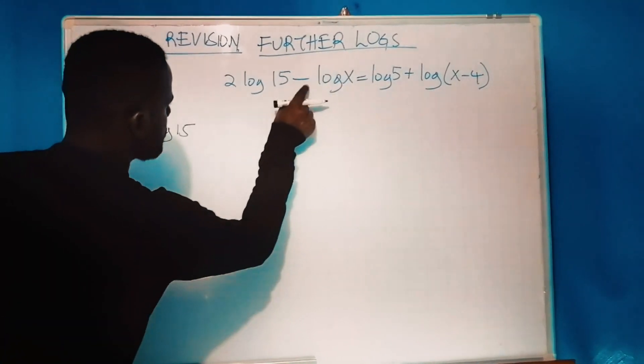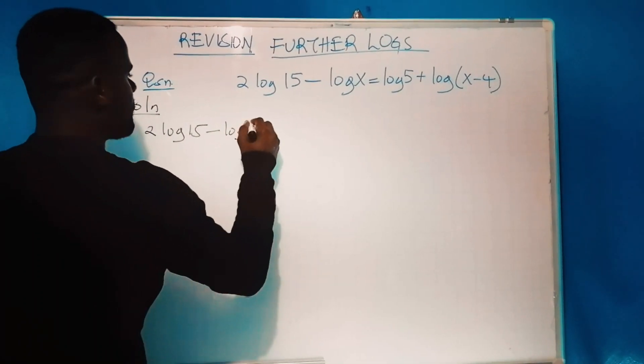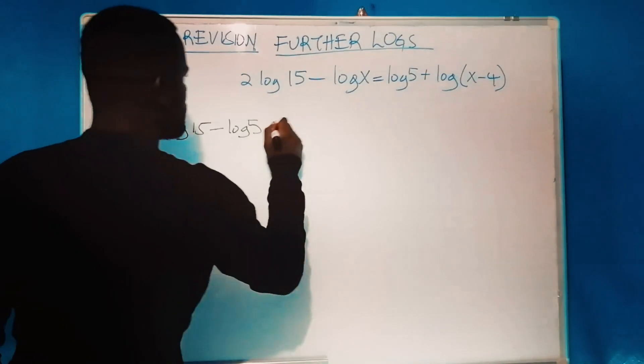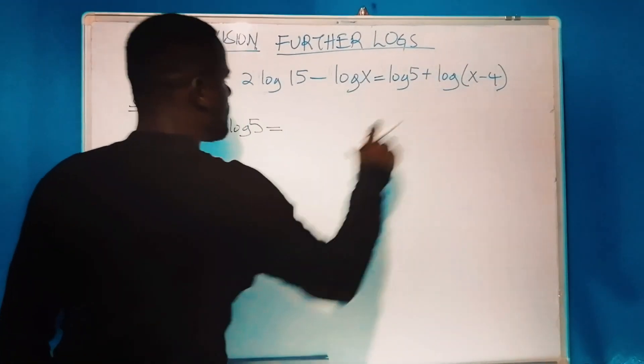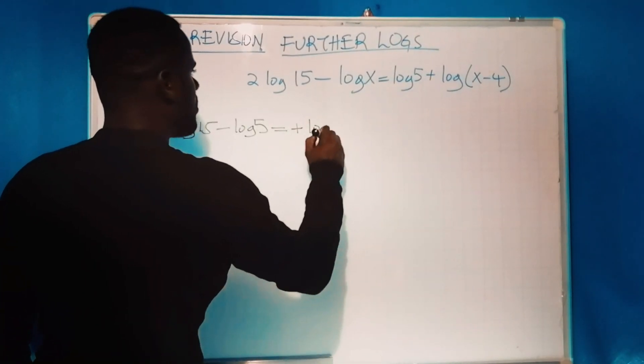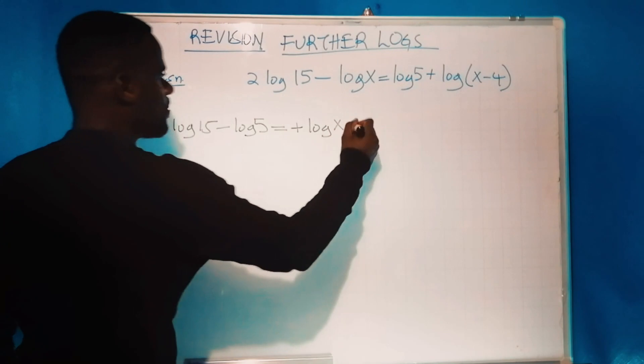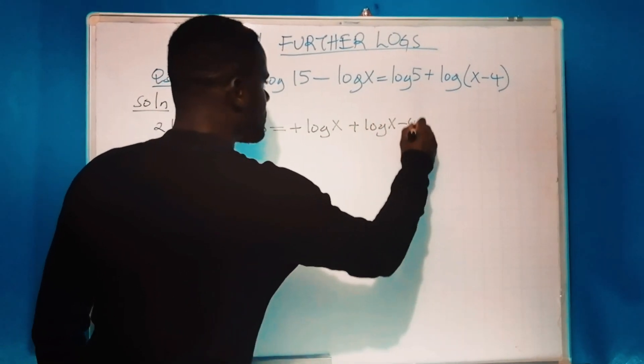of 5 crosses the equal sign to the other side, it becomes minus log 5. This is equivalent to having log x plus log(x - 4) on the other side.